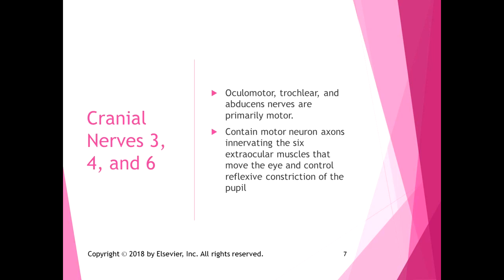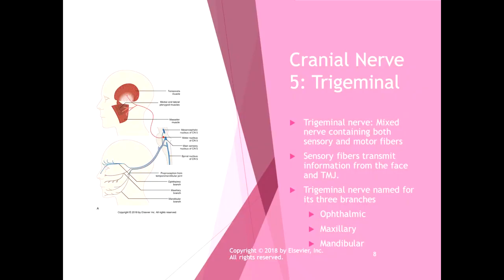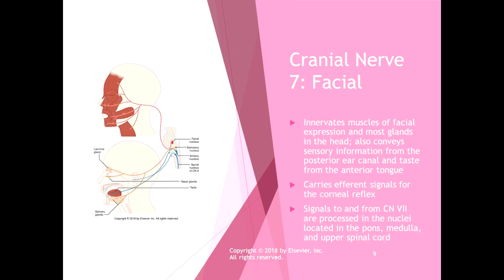Cranial nerve five is the trigeminal nerve — a hugely active and important mixed nerve containing both sensory and motor fibers. The sensory fibers transmit information from the face and TMJ. The trigeminal nerve is named for its three branches: the ophthalmic, maxillary, and mandibular. The trigeminal nerve is involved in the generation of migraine headaches, where dysfunction in the nerve creates sensation from the face that generates the headache.